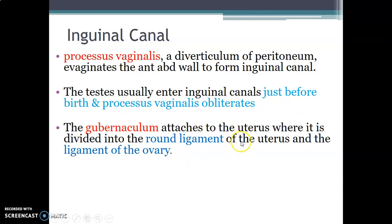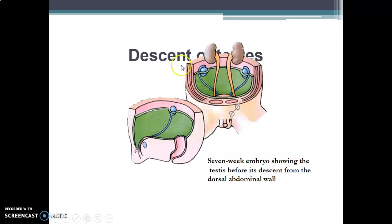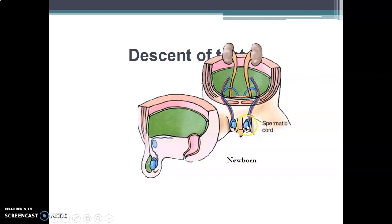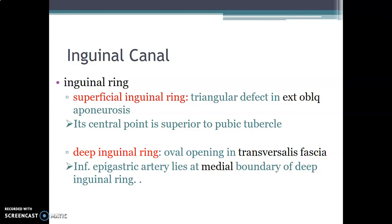The gubernaculum attaches to the uterus in females and is divided into the round ligament of the uterus and the ligament of the ovary. Regarding embryological stages: at seven weeks the testes are on the dorsal abdominal wall; at 28 weeks they pass through the inguinal canal; and in the newborn, the testes are in the scrotum. Thereafter, the processus vaginalis obliterates.